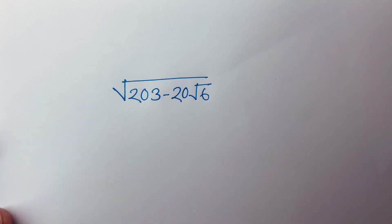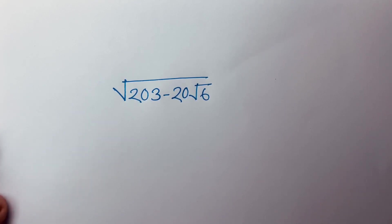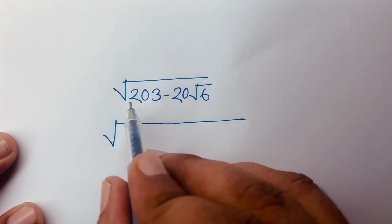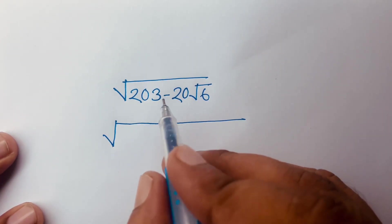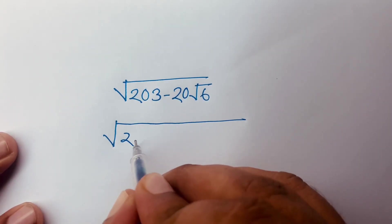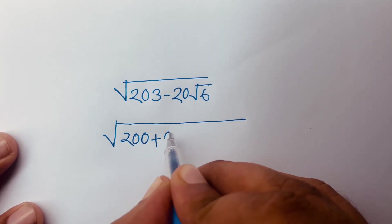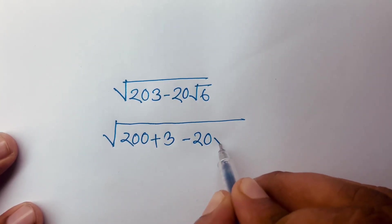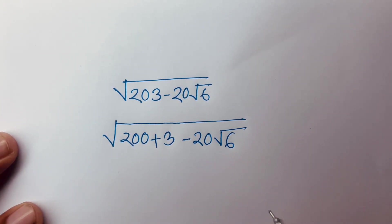Hello everyone. In this video we have solved a wonderful math question — it is a Japanese Math Olympiad question. First of all, I can see it will be a square root. Here is 203, which is 200 plus 3, minus 20 square root 6. So 200 plus 3 equals 23.